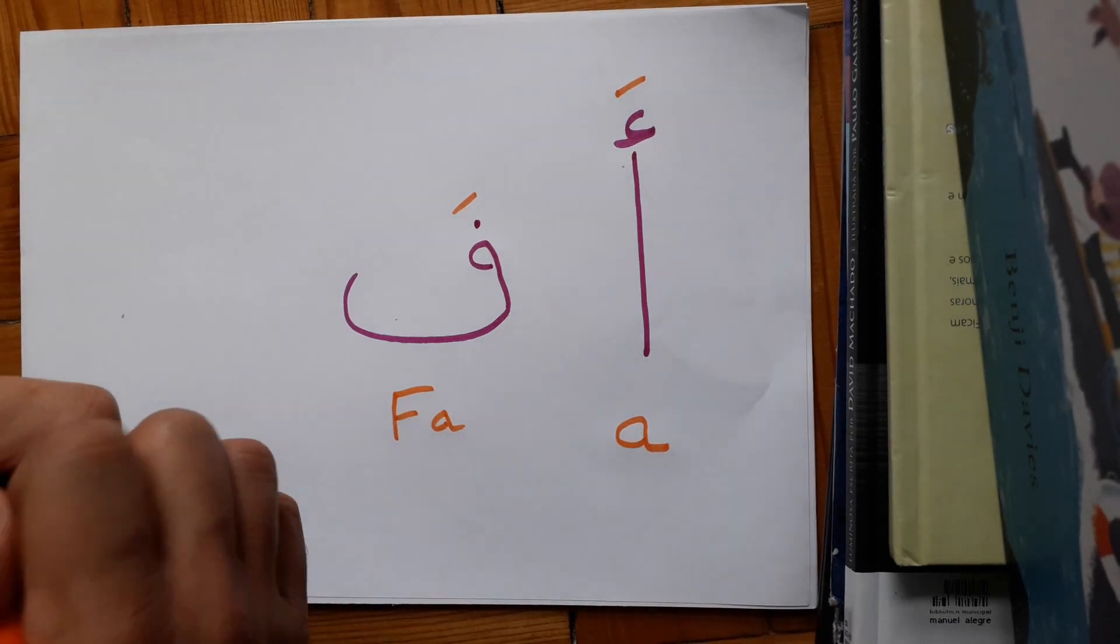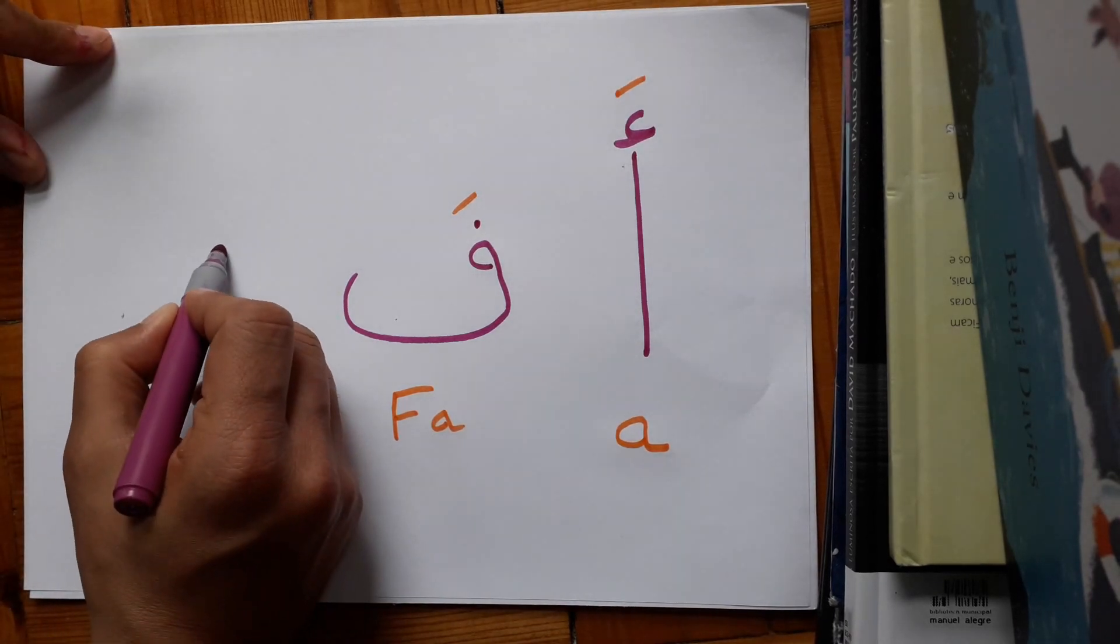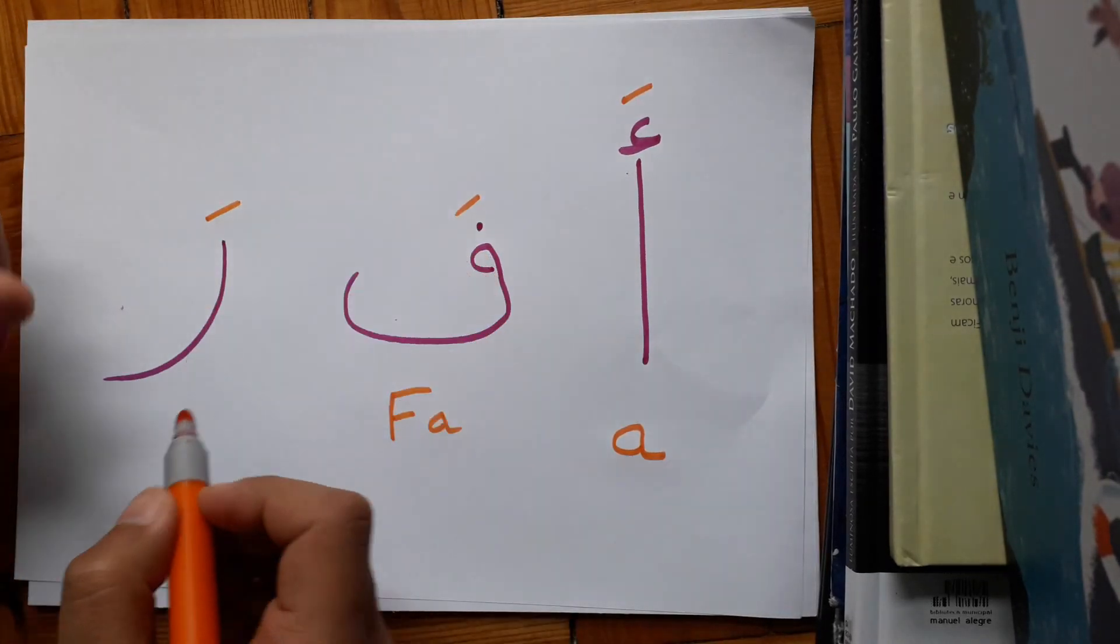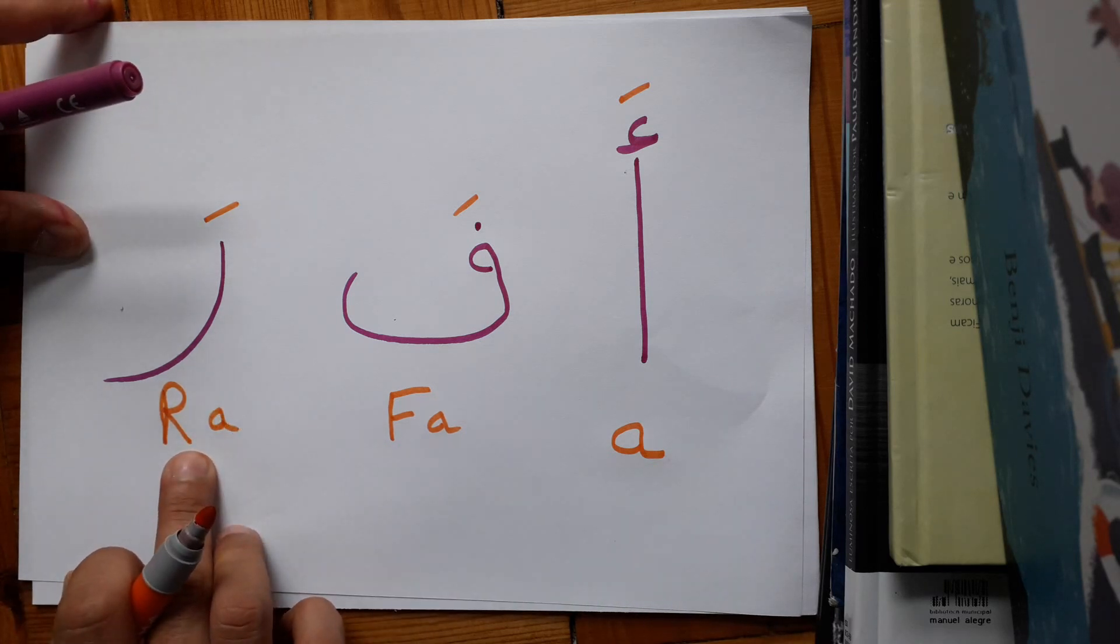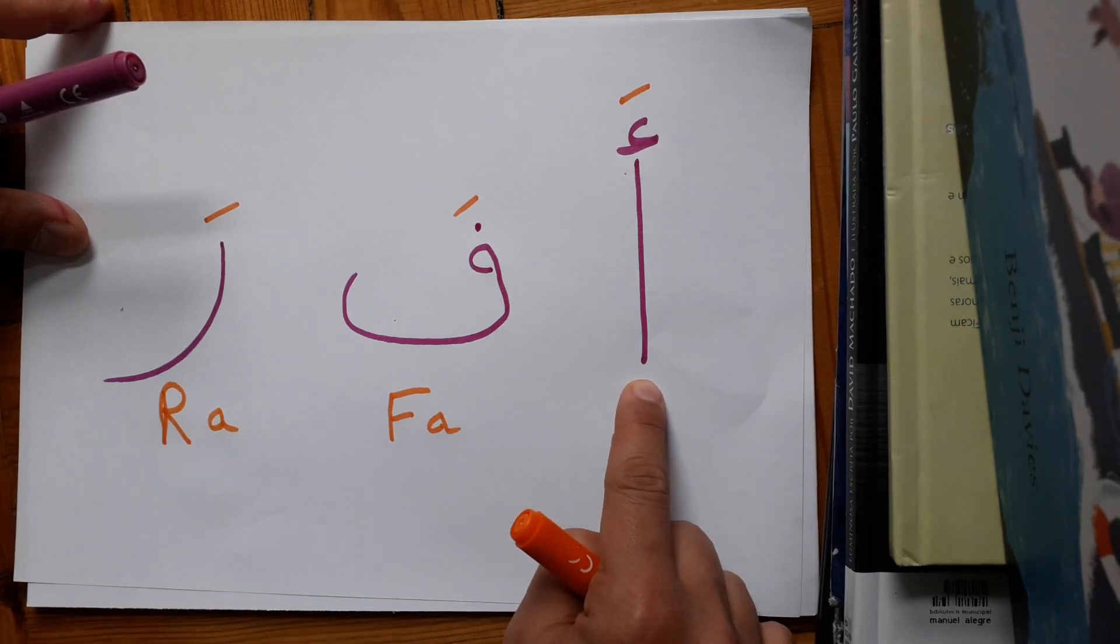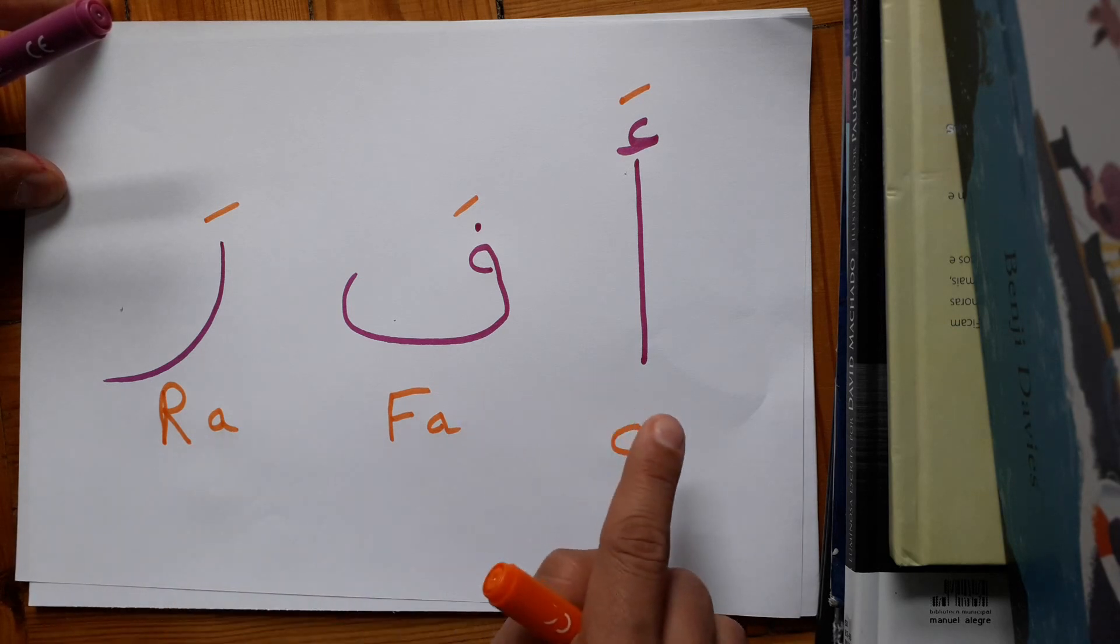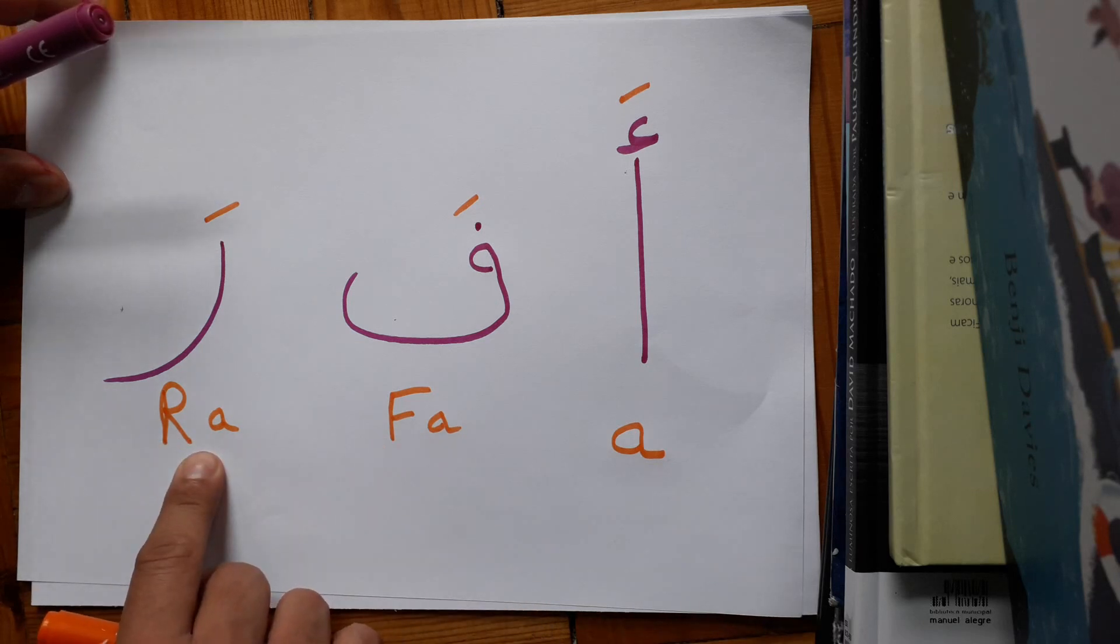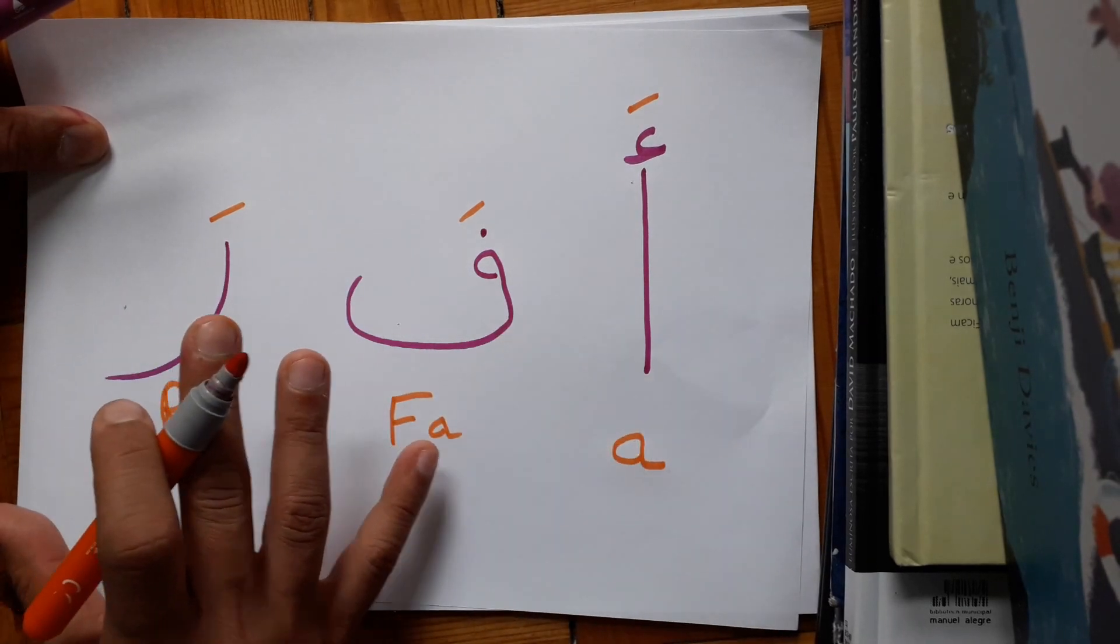The third one is with this mark, so it is 'ra'. So repeat after me, the third one is with this mark.